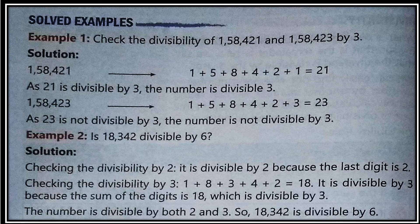Let's see a few examples. Check the divisibility of 158,421 and 158,423 by 3. We add the digits of the first number and get 21. Since 21 is divisible by 3, the number 158,421 is divisible by 3. For the second number, the digit sum is 23, and since 23 is not divisible by 3, the number 158,423 is not divisible by 3.